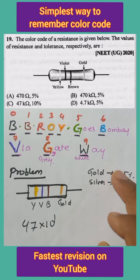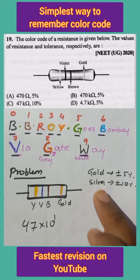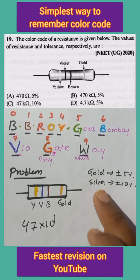The fourth band is Gold. Gold means the person has only 5% tolerance, while Silver means 10% tolerance. So the final answer is 470 ohms plus or minus 5%. Thank you very much.